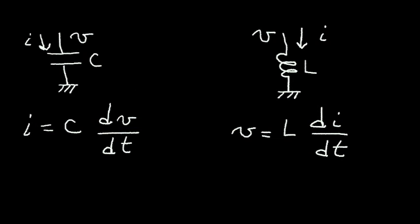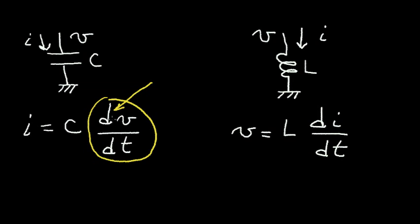Let's examine this dV/dT term. What does that mean? This d symbol is a term used in calculus. It means a very small change in voltage. So when I say dV, I mean a very small change in voltage divided by dT, which means a very small change in time.